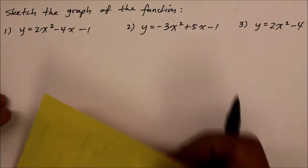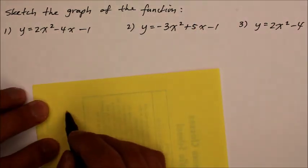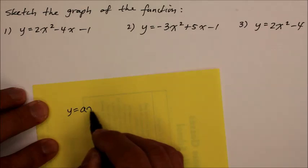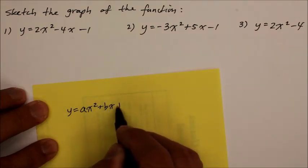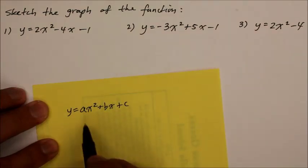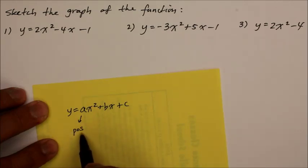We said if the function is given in standard form, y equals ax squared plus bx plus c, the a determines whether, if the a is positive, the parabola opens up, and if it's negative, it opens down.